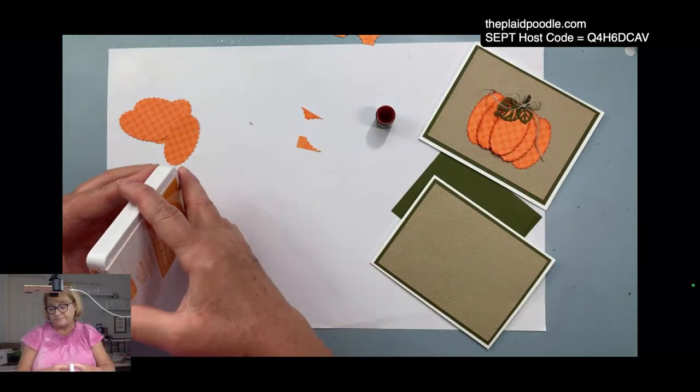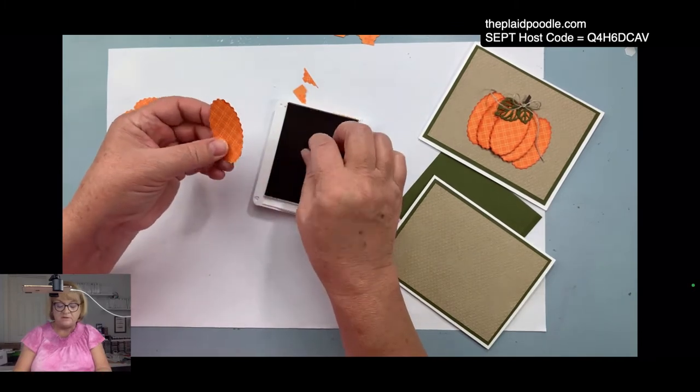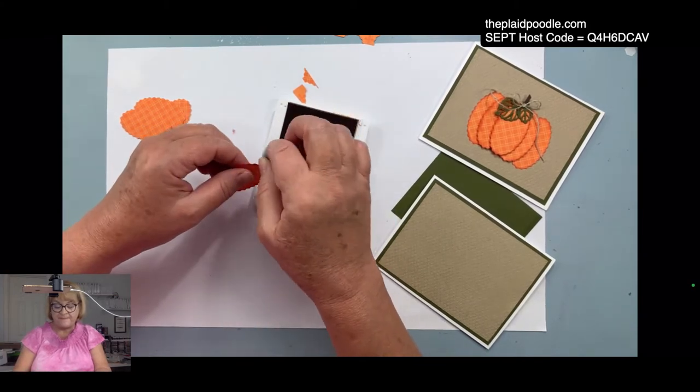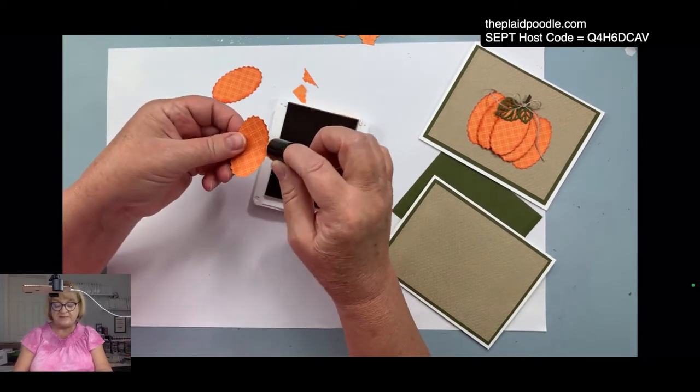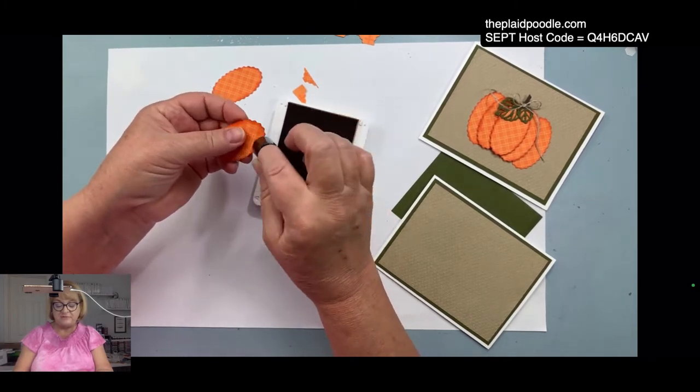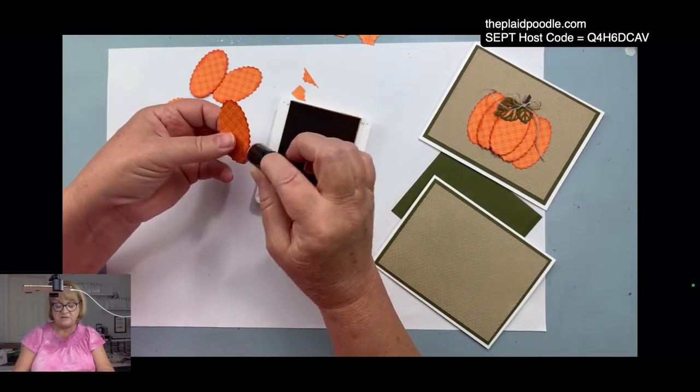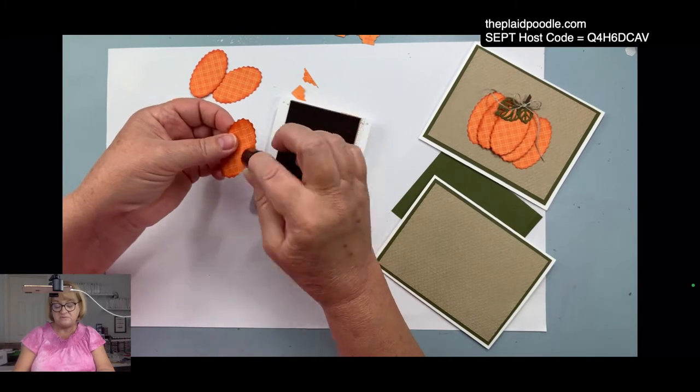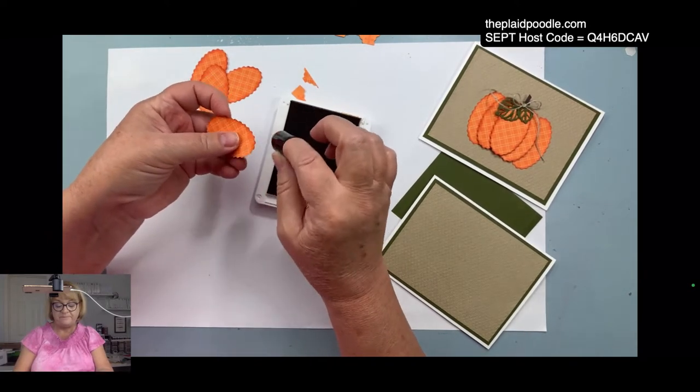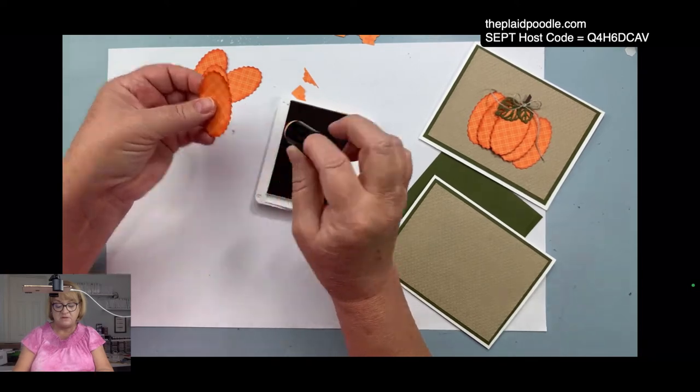Okay, that's all we're gonna punch. Then to give them a little dimension I'm going to use a sponge dauber and I'm just gonna use some pumpkin pie ink and sponge the edges. It's kind of magical how doing that gives it a little bit of dimension. Just kind of shading the edges, I guess it appears to be a shadow so it makes it look like it has a little dimension.